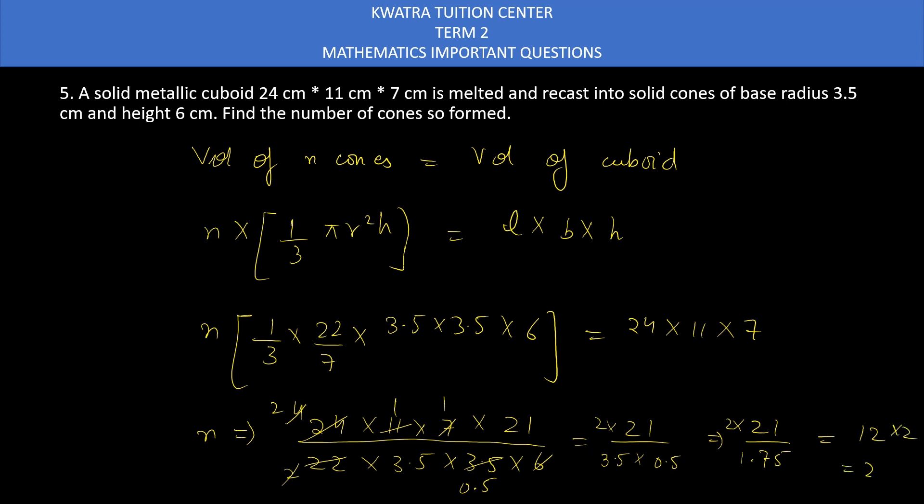Multiply 12 with 2, it will give you 24. That means, number of cones formed will be 24.